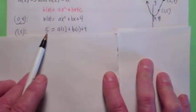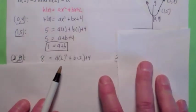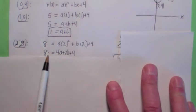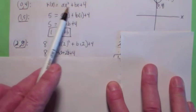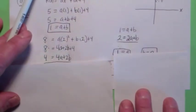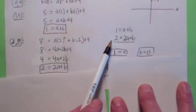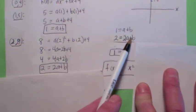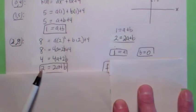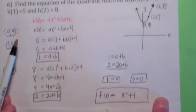Plugging in (1, 5): 5 = a + b + 4, so a + b = 1. Plugging in (2, 8): 8 = 4a + 2b + 4, subtract 4 and divide by 2 to get 2a + b = 2. Subtracting the first equation from the second: a = 1. Since a + b = 1 and a = 1, b = 0. It turns out (0, 4) was the vertex after all, but we didn't assume that — it came out of the math. The function is f(x) = x² + 4.